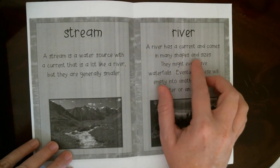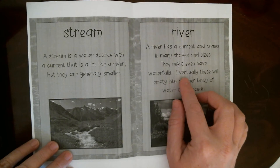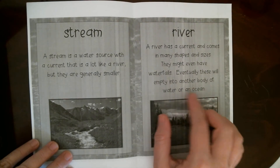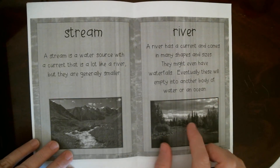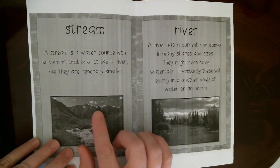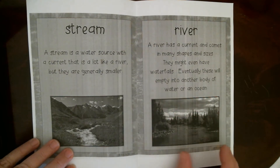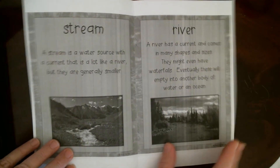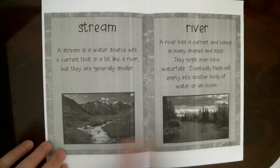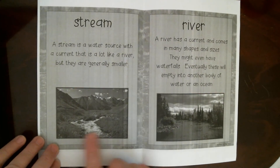A river has a current and comes in many shapes and sizes. Rivers might even have waterfalls, and eventually they empty into another body of water or an ocean. Most rivers start up in the mountains with snow melting and flow downward — gravity pulls them down towards other bodies of water or the ocean. You can see the difference: a river is much wider than a stream.